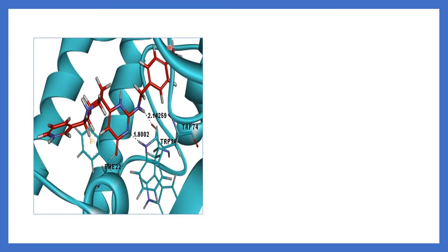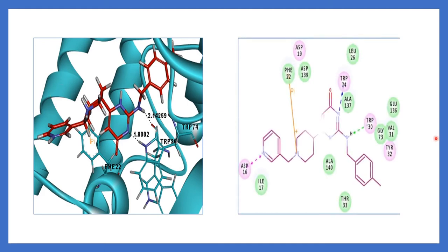This is another diagram of the same ligand and protein which are interacting — a 3D representation. Here you can see the ligand in red color sticks and the protein in blue color cartoon representation. For a better view, I have given the ligand in the 2D representation and the residues of the proteins which are interacting with the ligand.